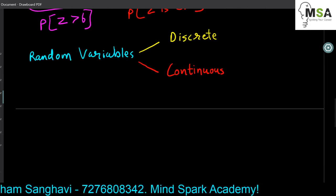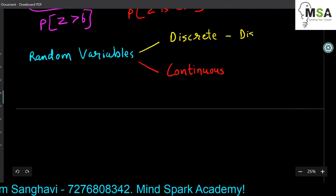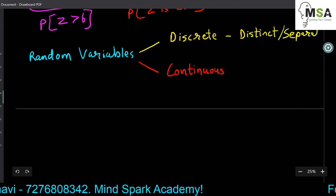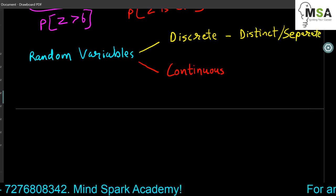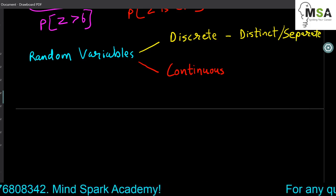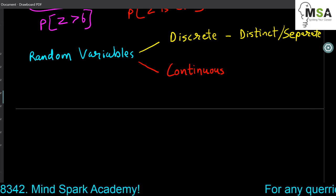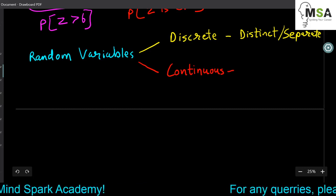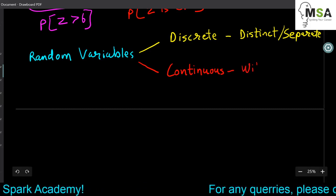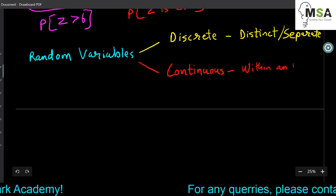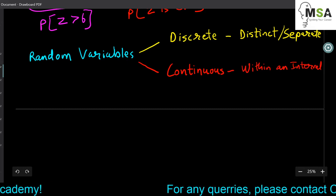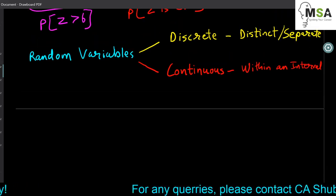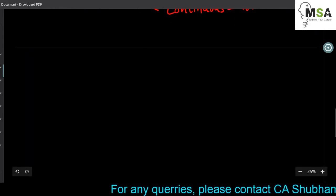The literal meaning of discrete in English is basically distinct or separate. The relevant meaning here is the distinct or separate value of every random variable. Similarly, continuous means within an interval. Let's take a few examples and decide which of them are discrete and which are continuous.